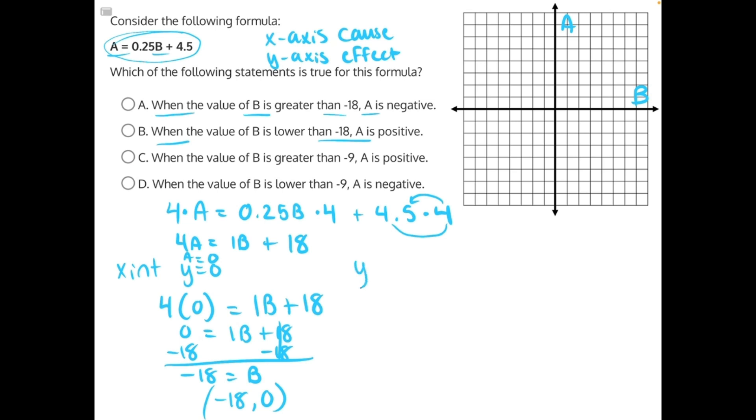Now let's find our y-intercept, or when x equals 0. In this case, when B equals 0. So I'll have 4A equals 1B, 1 times 0 plus 18. 1 times 0 will give us 0, so this will cancel out, leaving us with 4A equals 18.